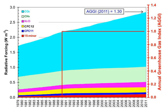Without greenhouse gases, the average temperature of Earth's surface would be about minus 18 degrees Celsius (0 degrees Fahrenheit), rather than the present average of 15 degrees Celsius (59 degrees Fahrenheit). The atmospheres of Venus, Mars, and Titan also contain greenhouse gases.